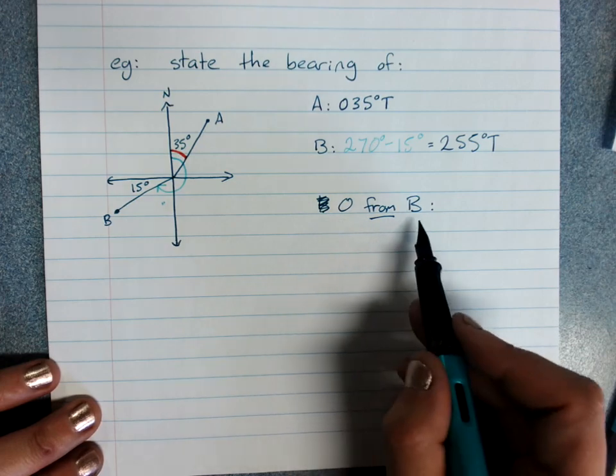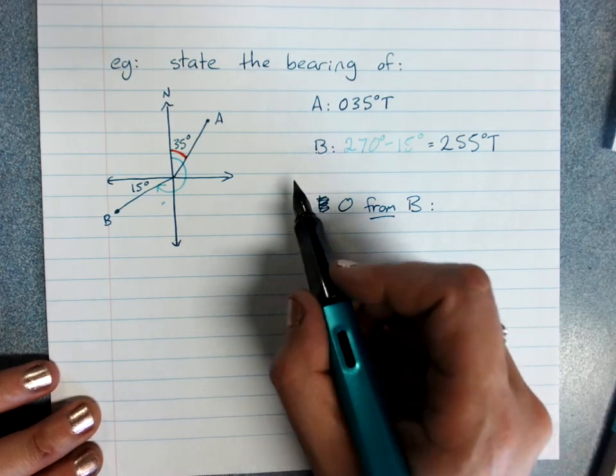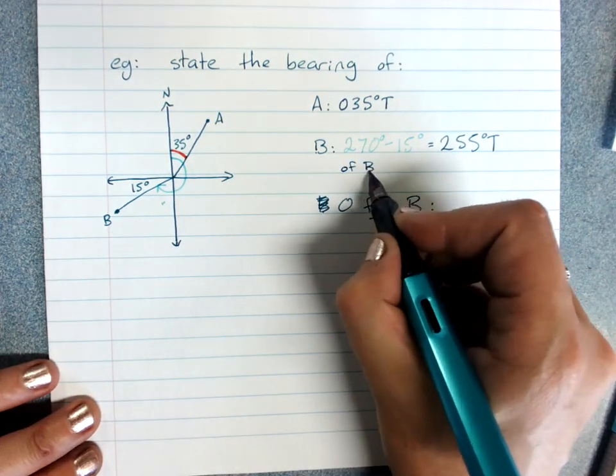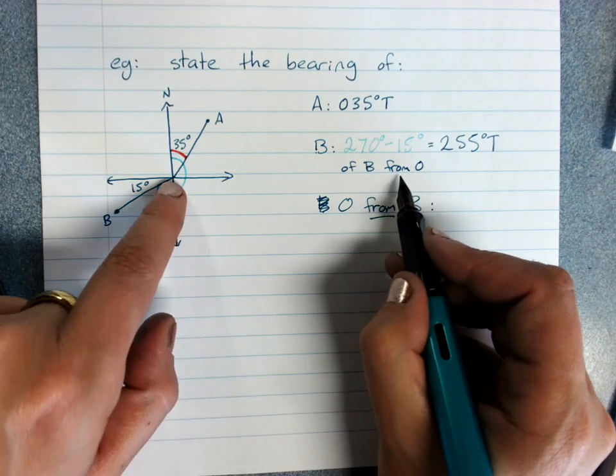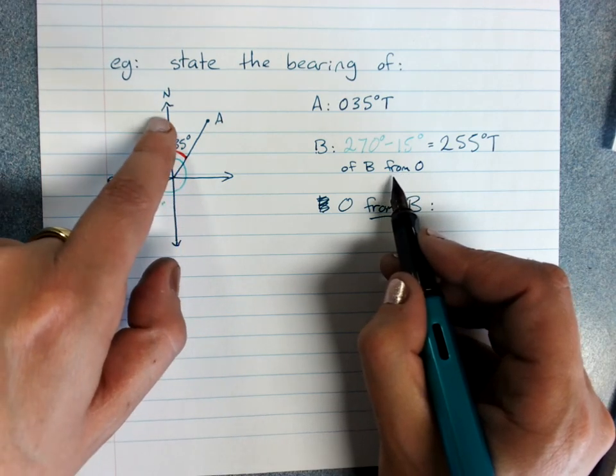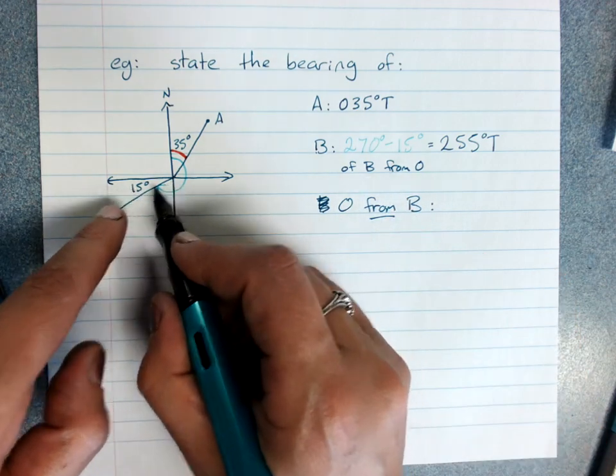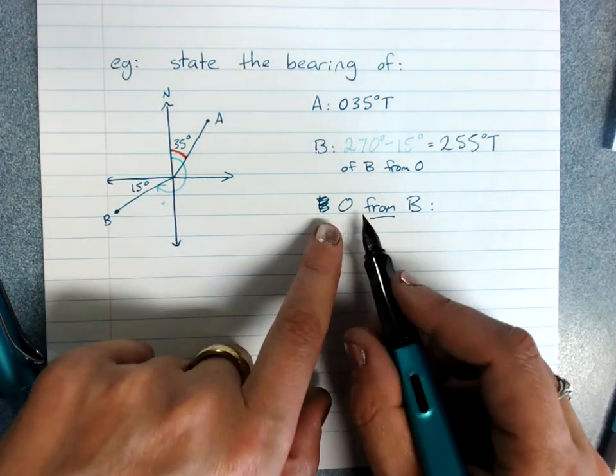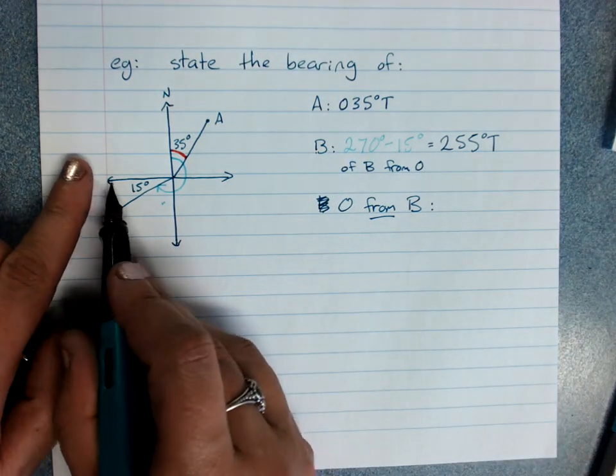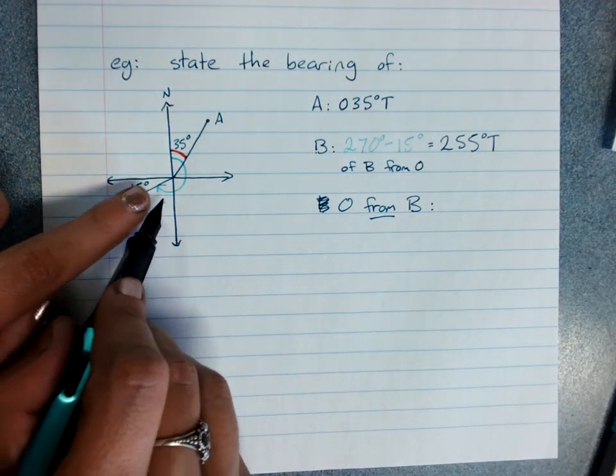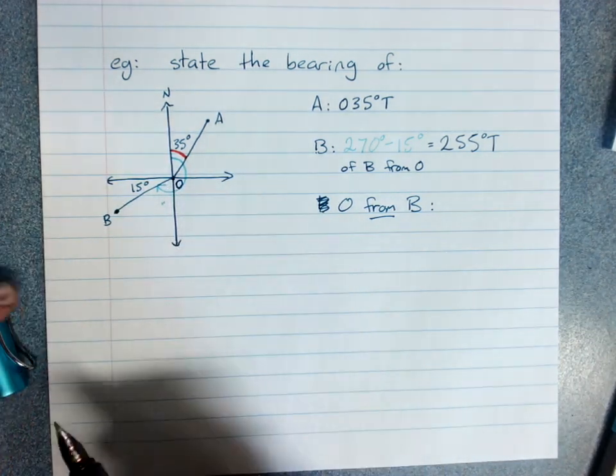Now here's an interesting little question. This was the bearing, if we wrote that properly, it would be of B from O. That is, we're standing at O, looking north. What's the angle we turn around to be facing B? O from B says if you're standing at B facing north, what's the angle we turn around to face back towards O. O is always the origin, the center there.